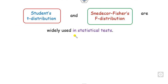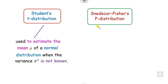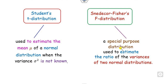All of us know that there are two widely used statistical tests. One is called the Student T-test, and the second is called the Fisher F-test. The Student T-test is basically used to estimate the population mean when the variance is not given. The F distribution is basically used to estimate the ratio of the variances of two normally distributed populations.